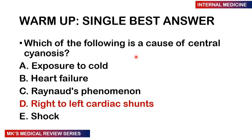Coming back to the warm-up question — which of the following is a cause of central cyanosis? A. Exposure to cold. B. Heart failure. C. Reynolds phenomenon. D. Right to left cardiac shunts. E. Shock. Most of the other options cause peripheral cyanosis, not central cyanosis. But with right to left cardiac shunts — the cyanotic congenital heart diseases — these present with central cyanosis. The answer is D.